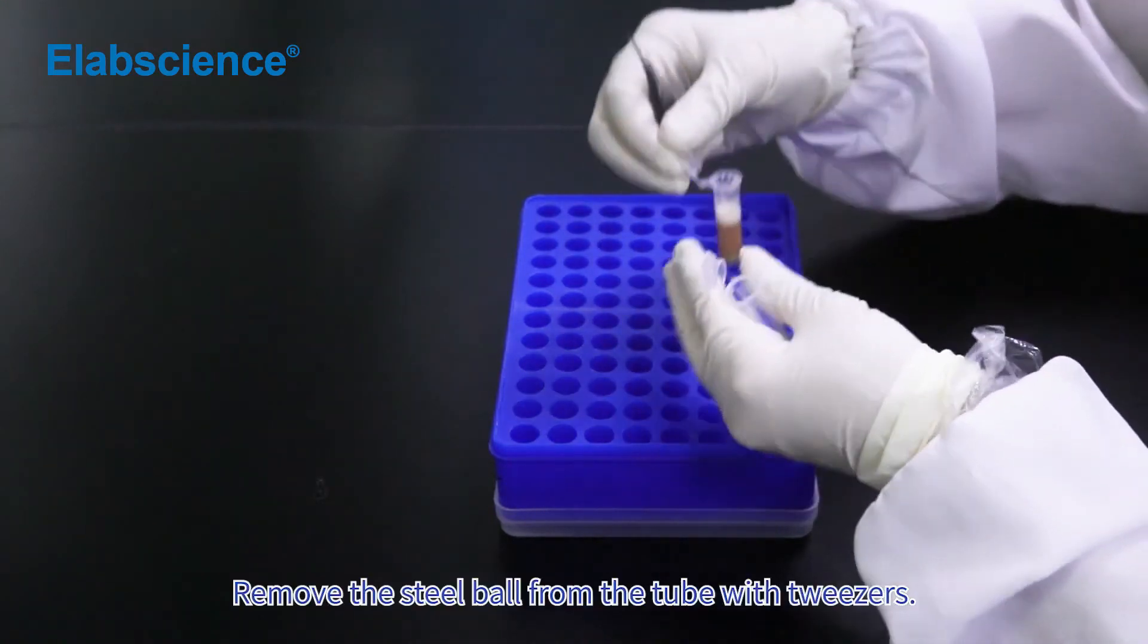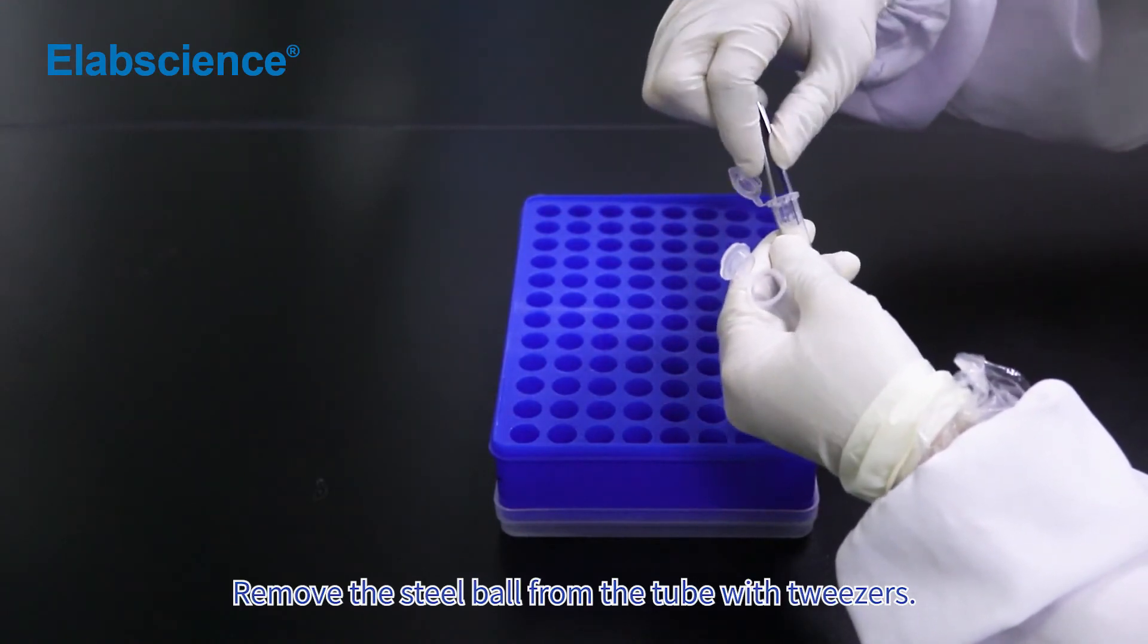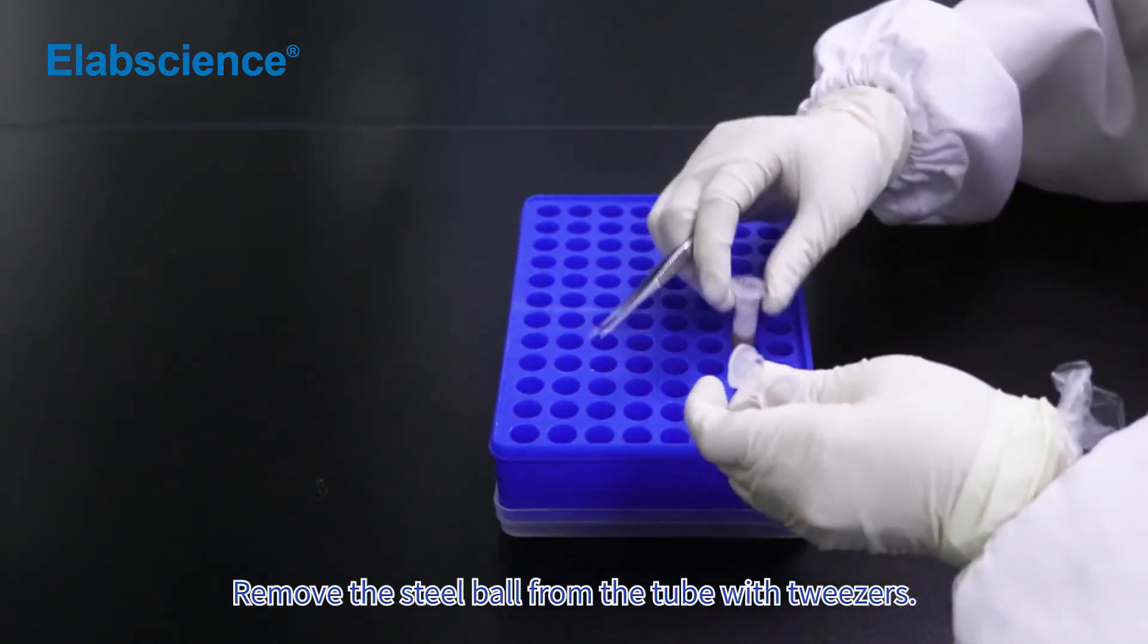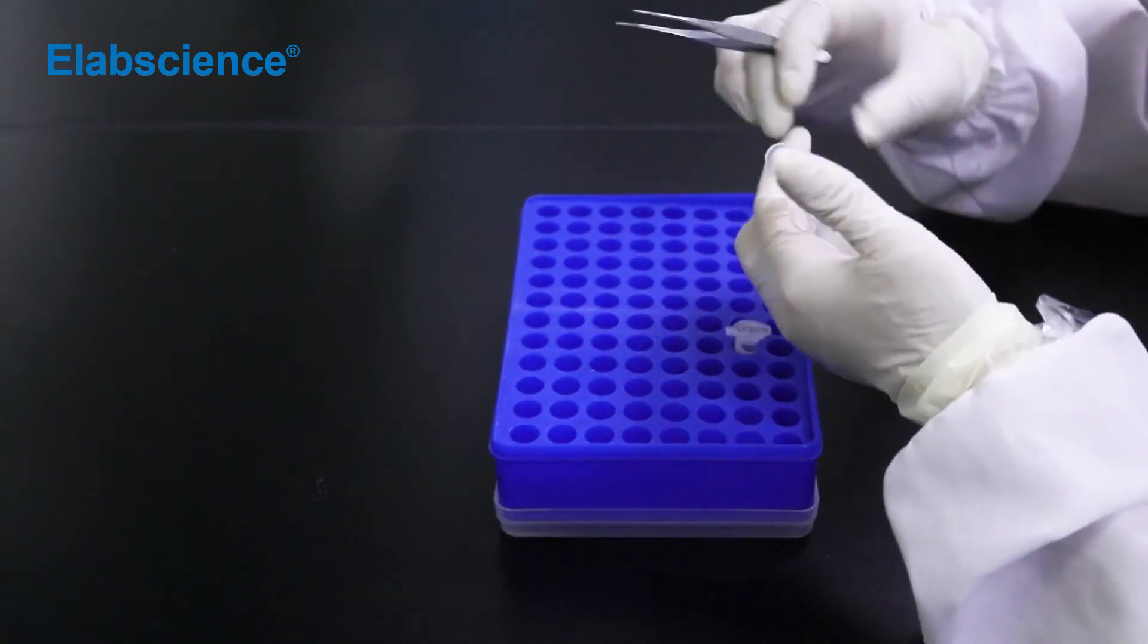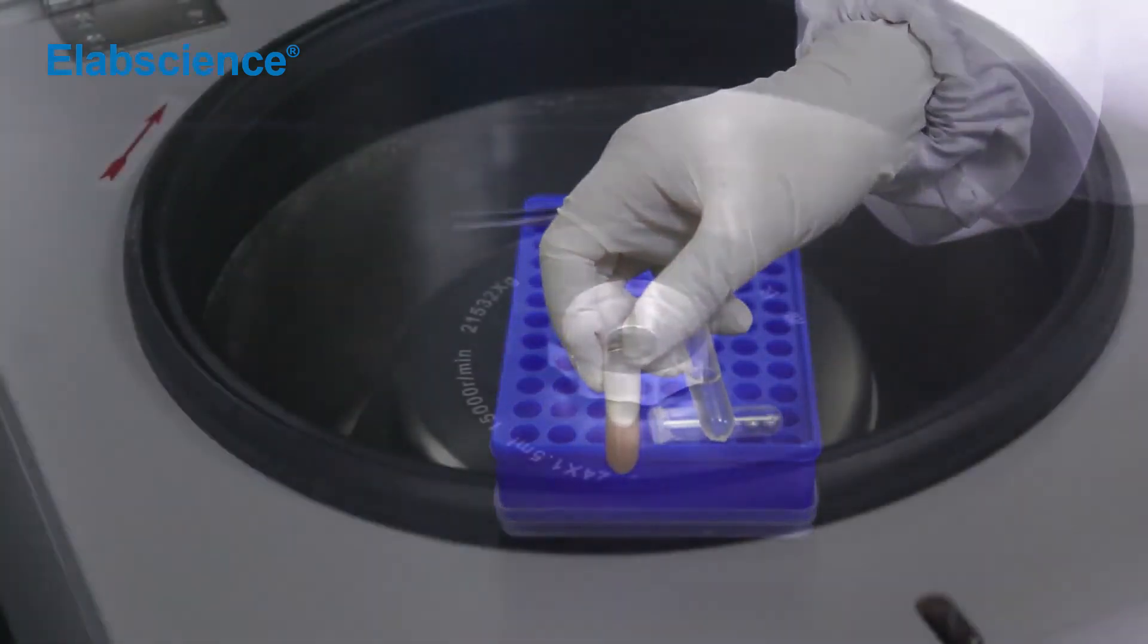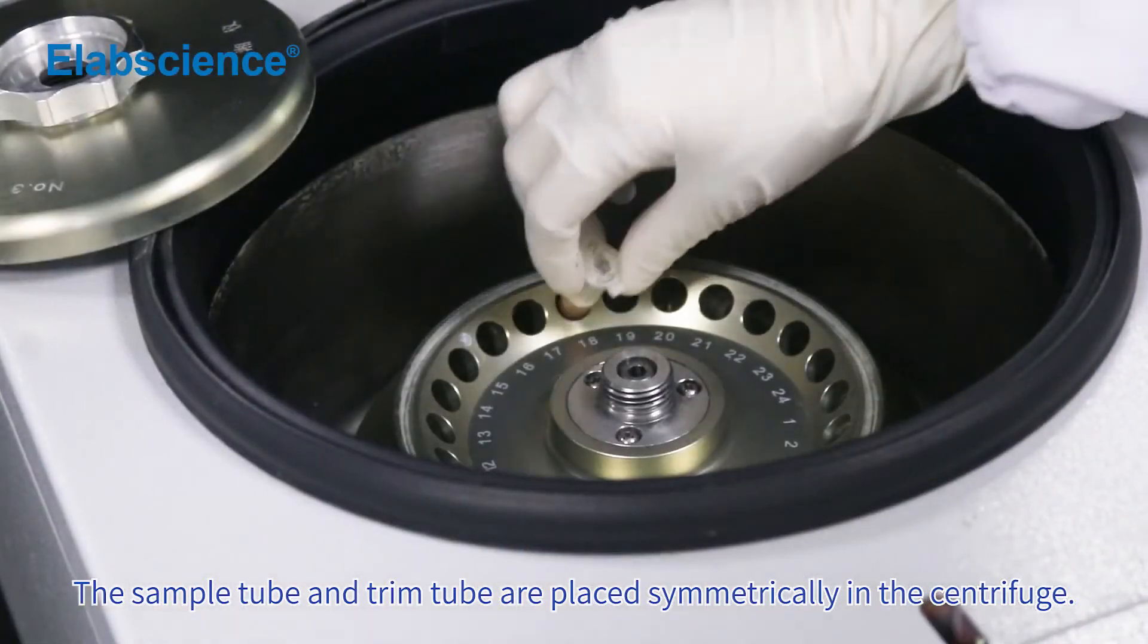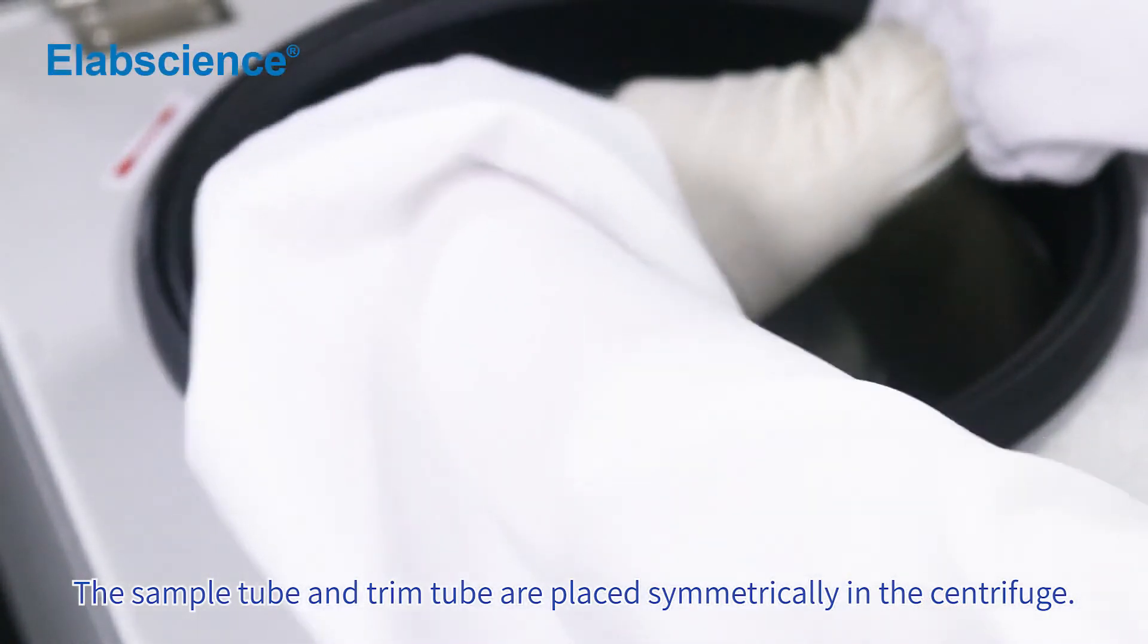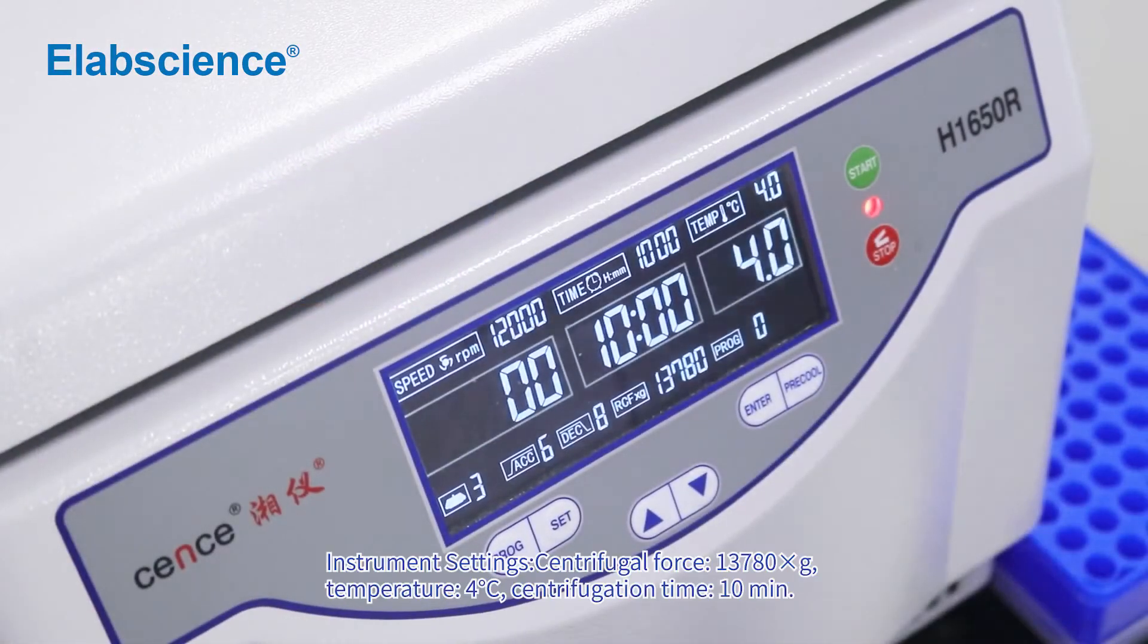Remove the steel ball from the tube with tweezers. The sample tube and trim tube are placed symmetrically in the centrifuge. Instrument settings.